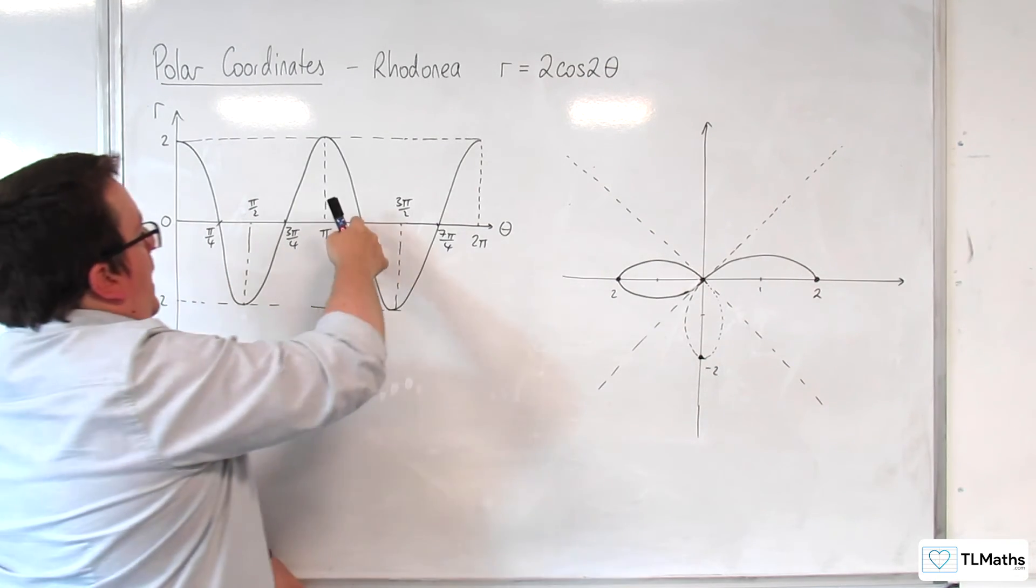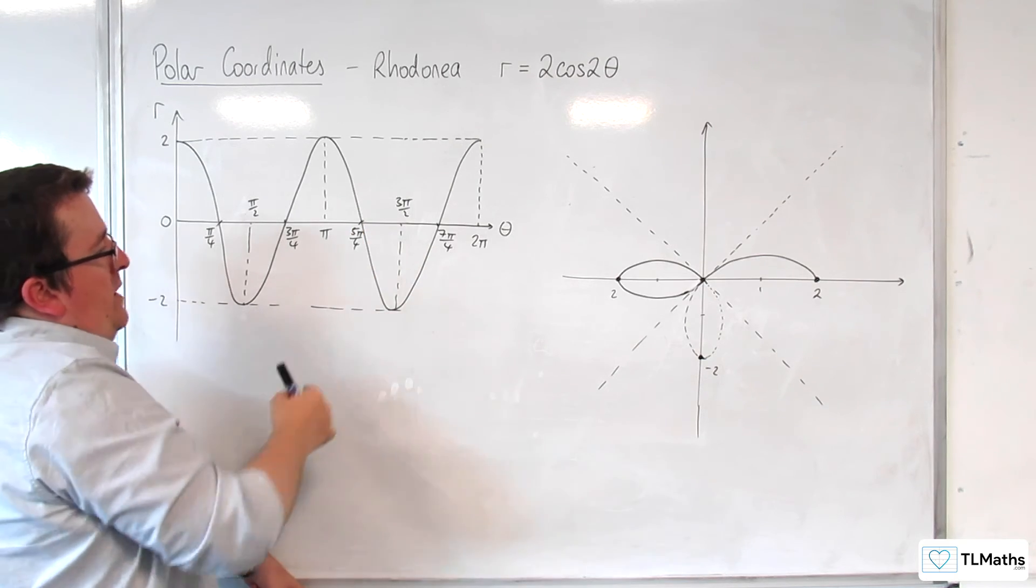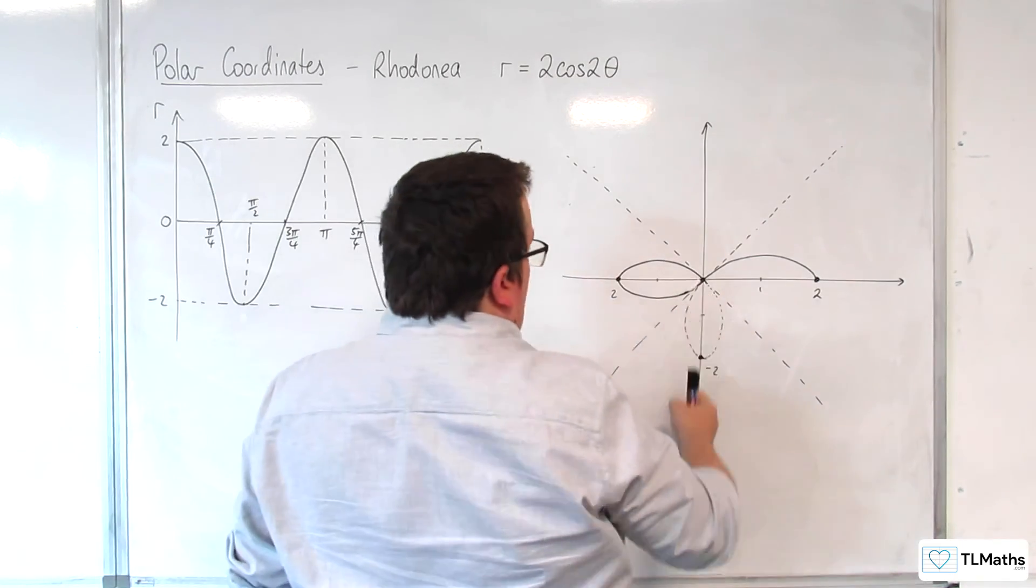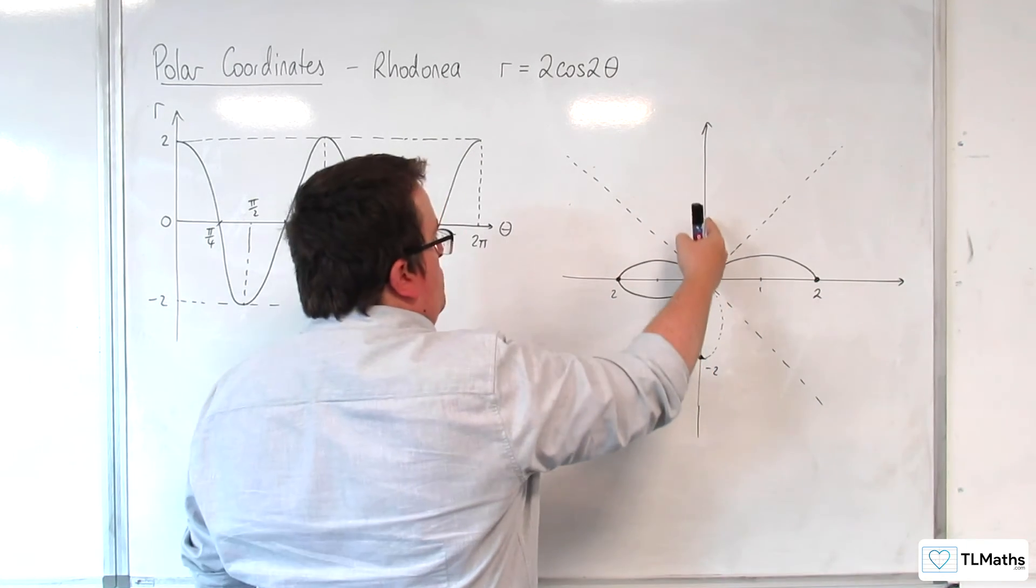And then, past 5 pi over 4, we go back to negative value of r, up to 3 pi over 2. So, 3 pi over 2, we'd be looking here. But r is negative, so we're up here.